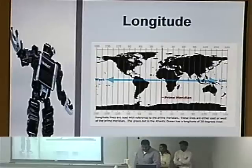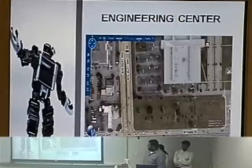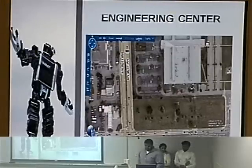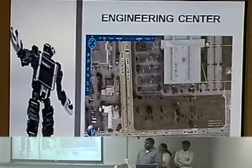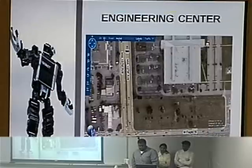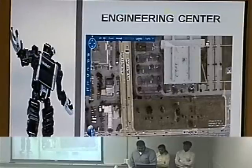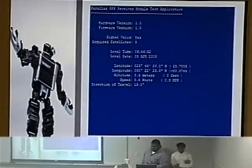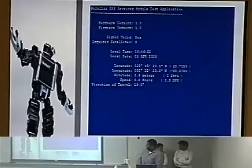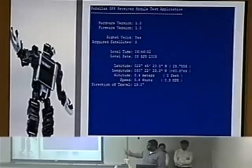This is the engineering center — the view we can get from Microsoft Virtual Earth. We were trying to make a path, but unfortunately we won't be able to test the GPS inside the building because we can't get signal from satellites indoors. So we are trying to make a path out of the building from the main entrance to one of the sites nearby. The GPS from Parallax detects how many satellites are detected, the universal time, local date, latitude, longitude, speed, and direction of travel.